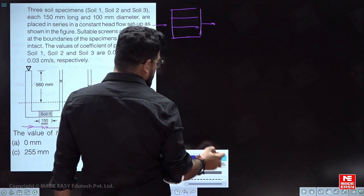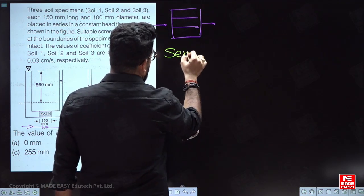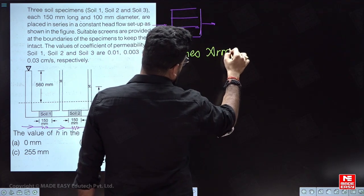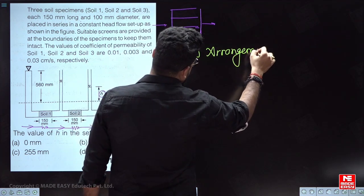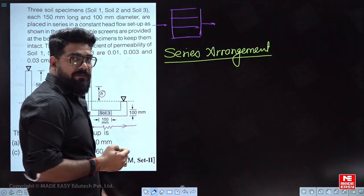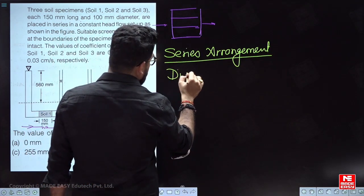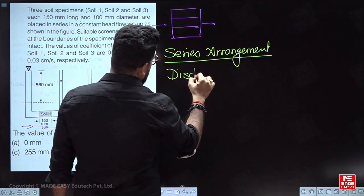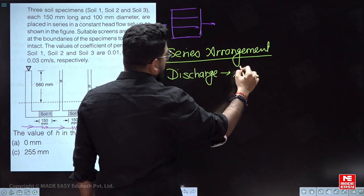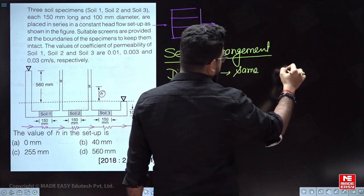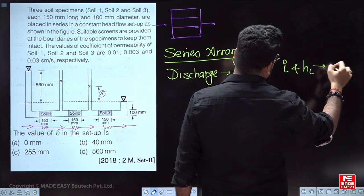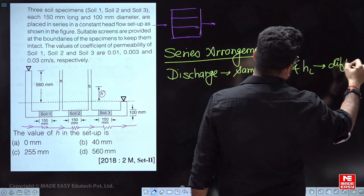Whenever series arrangement comes in the question, remember: discharge will be constant — discharge will be the same in all three soils. And importantly, the hydraulic gradient (i) and head loss will be different through each layer.